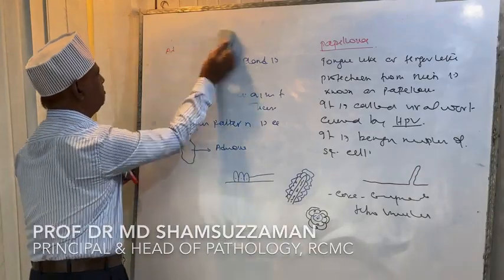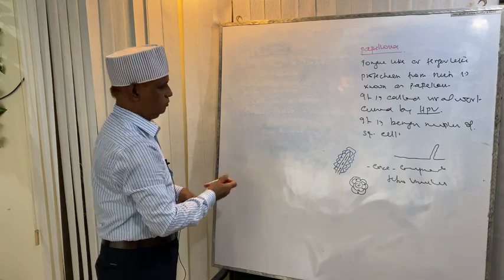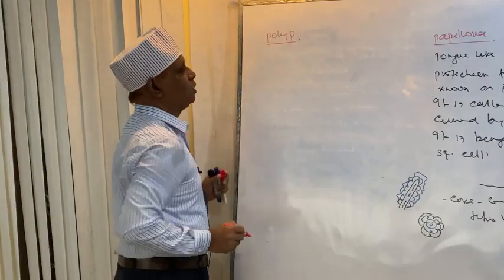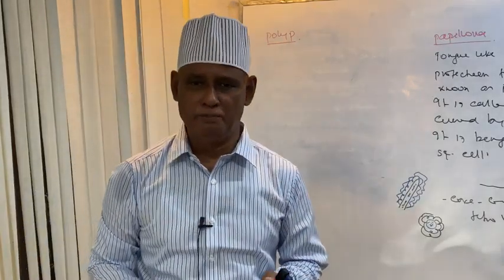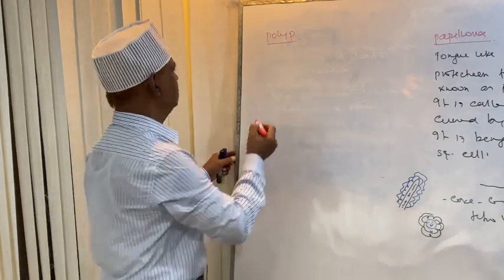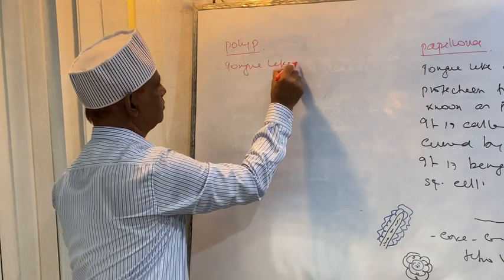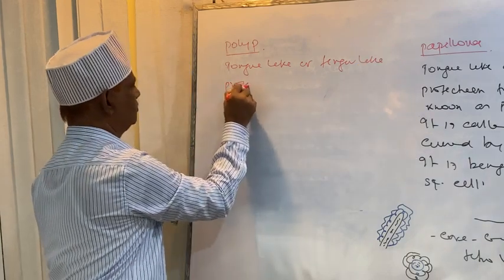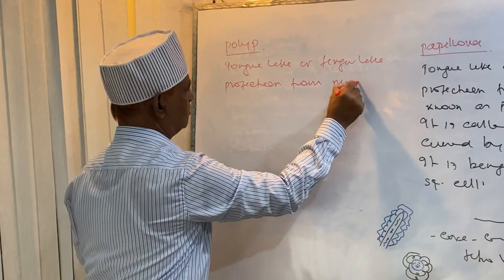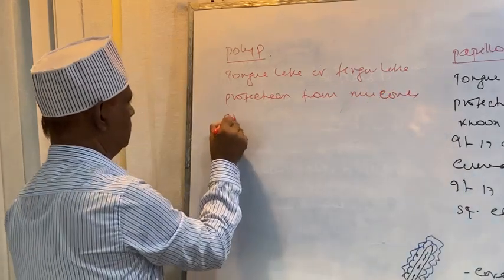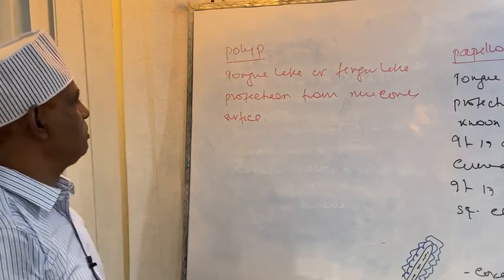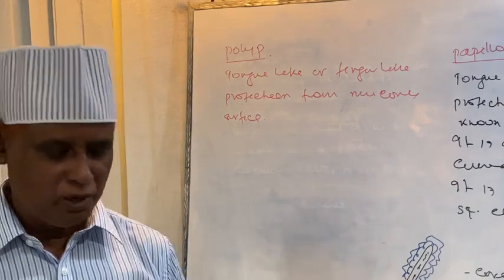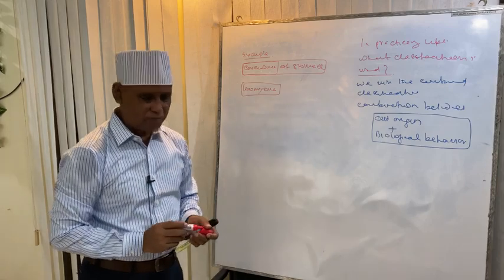Polyp: tongue-like or finger-like projection from the mucosal surface is called a polyp, whereas a similar projection from the skin is called papilloma. That ends today's lecture. Thanks to all.